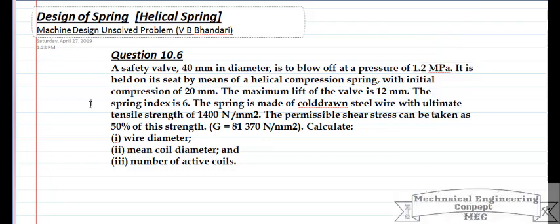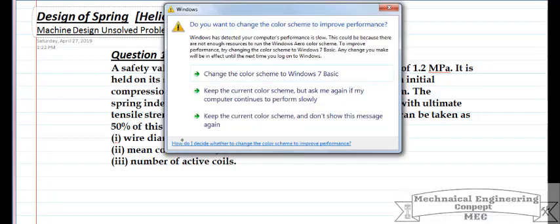40 mm in diameter, to blow off at a pressure of 1.2 MPa. It is held on its seat by means of a helical compression spring with initial compression of 20 mm. The maximum lift of the valve is 12 mm, the spring index is 6. The spring is made of cold-drawn round steel wire with ultimate tensile strength of 1,400 MPa. The permissible shear stress is 50% of the ultimate strength, and modulus of rigidity is 81,370 MPa. We need to calculate wire diameter, mean coil diameter, and number of active coils.